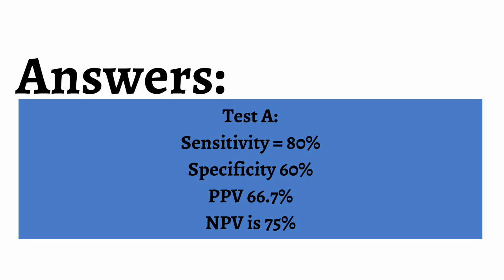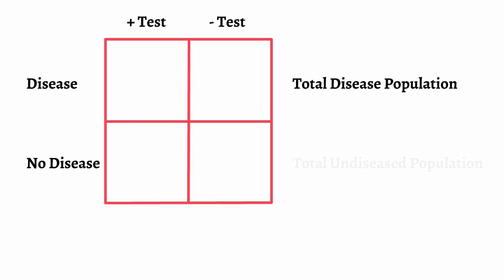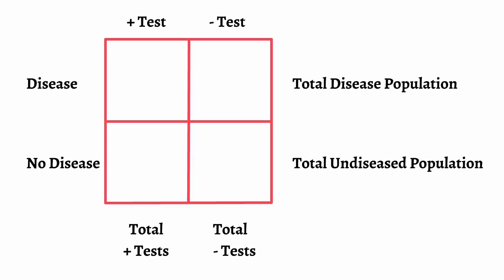The sensitivity of test A is 80%, specificity 60%, positive predictive value 66.7%, and negative predictive value 75%. Whenever encountering a question involving specificity or sensitivity, make a 2x2 table with disease and no disease on the vertical axis, and positive tests and negative tests on the horizontal axis. We can include the total disease population in the top right outside the box, and the undiseased population in the bottom right. We place the total people who test positive in the bottom left outside the box, and the total people who test negative on the bottom right outside the box.